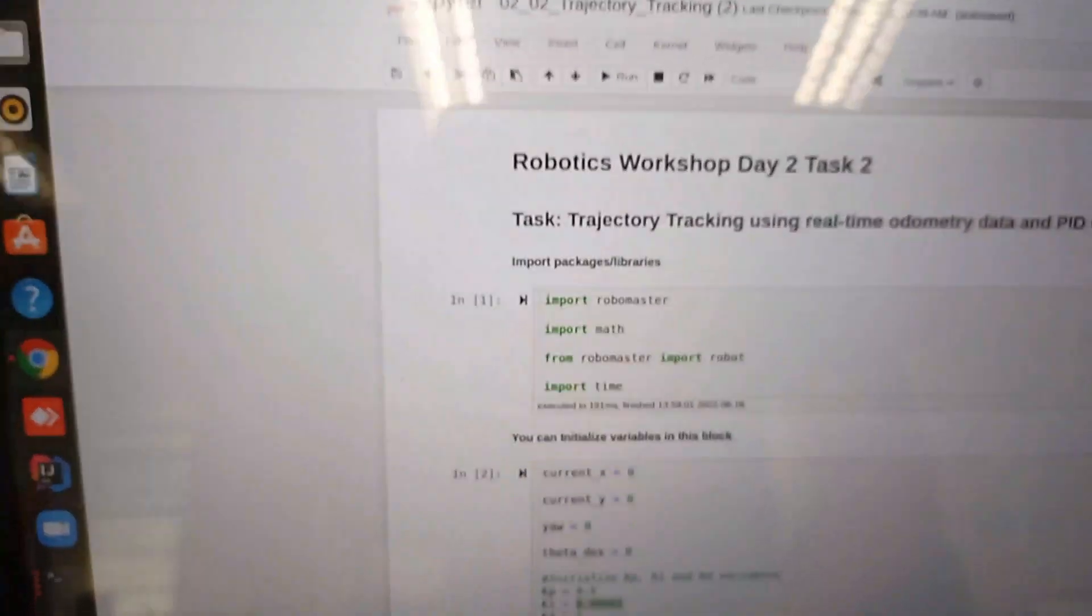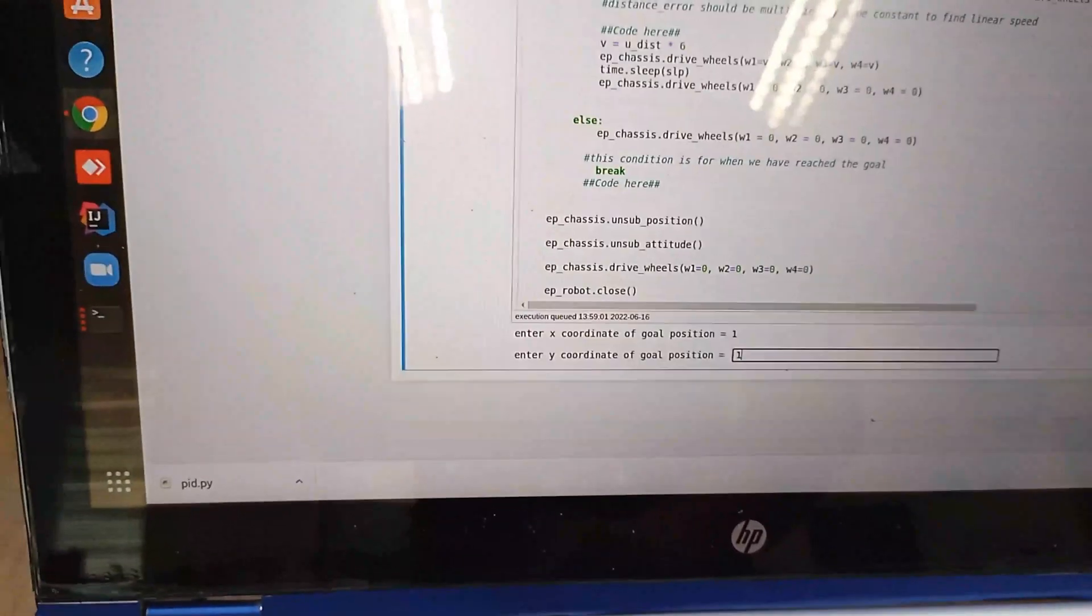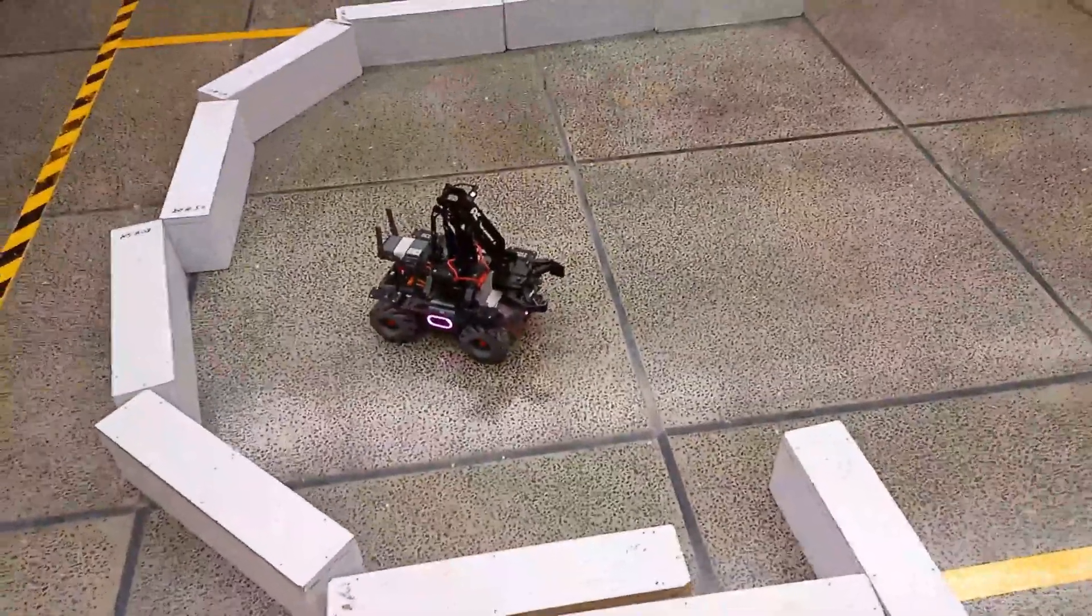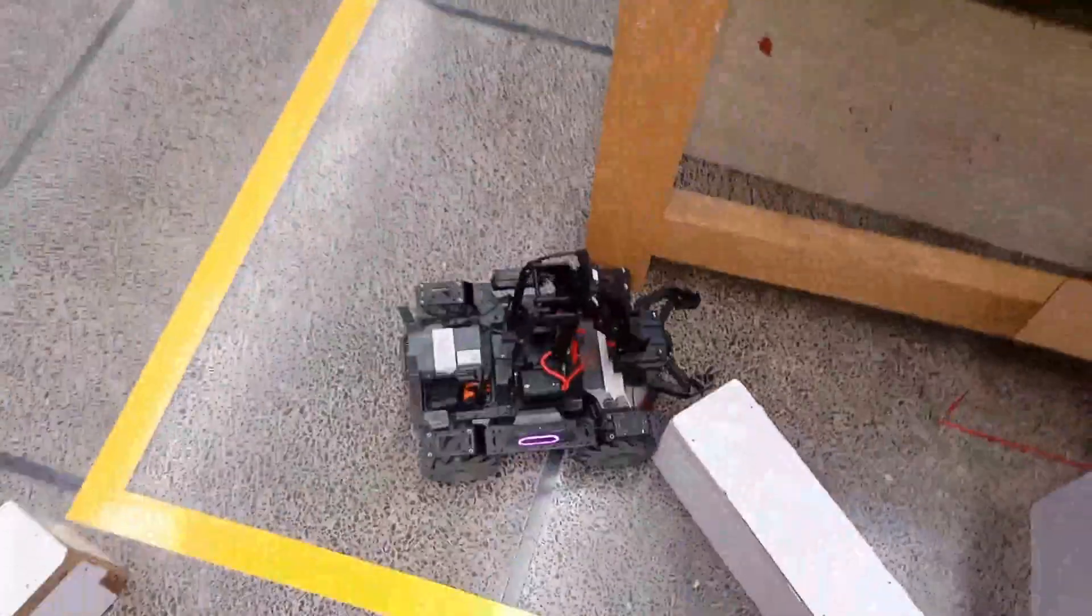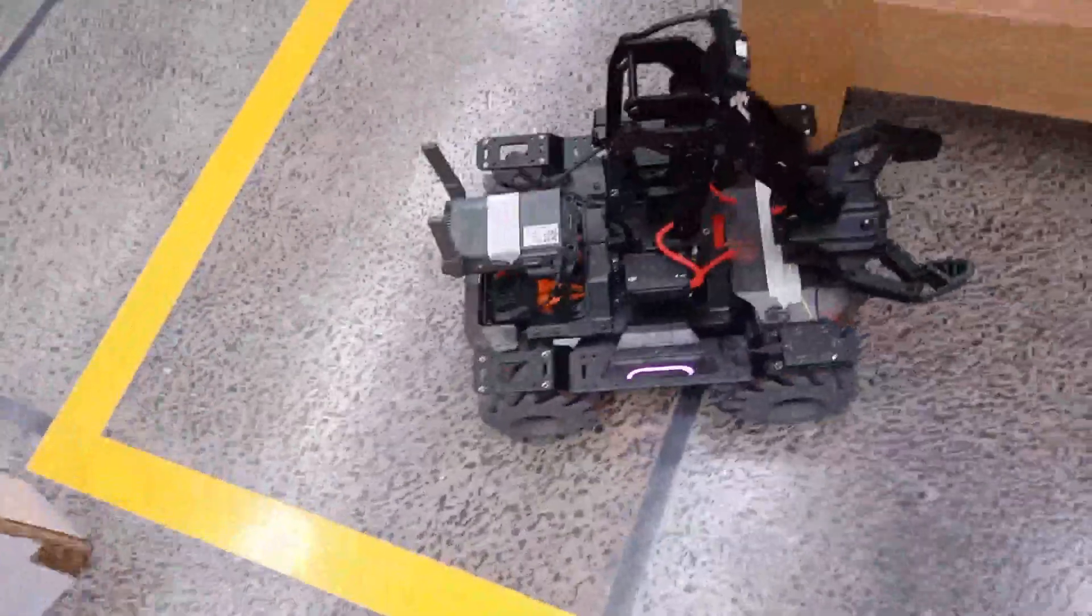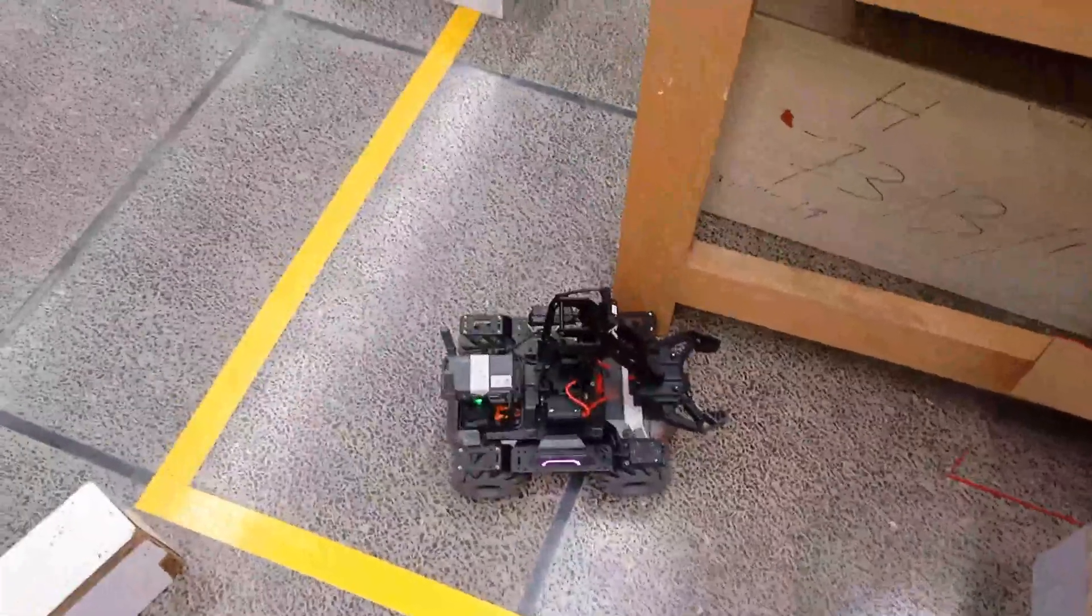I have written this entire code to connect my RoboMaster robot and I have imported the robot. I am giving this value and you can see that the robot has started to move and it will move in that direction. It has reached its destination so I can change the coordinates now.